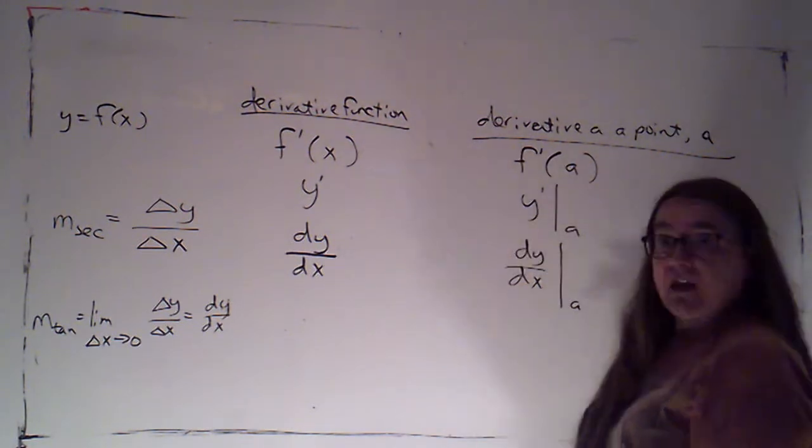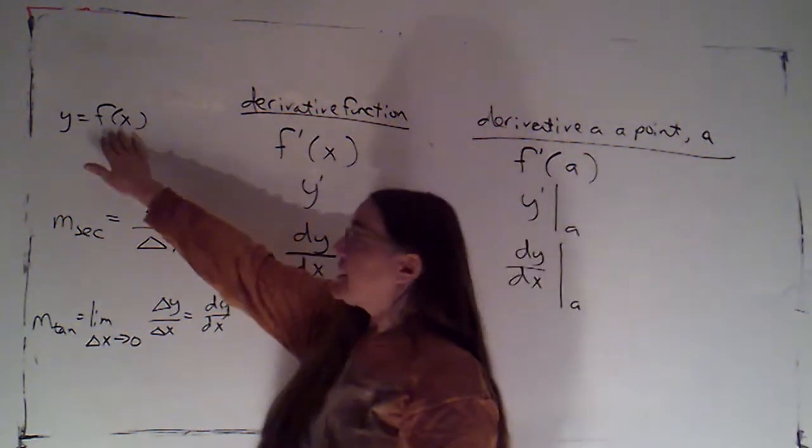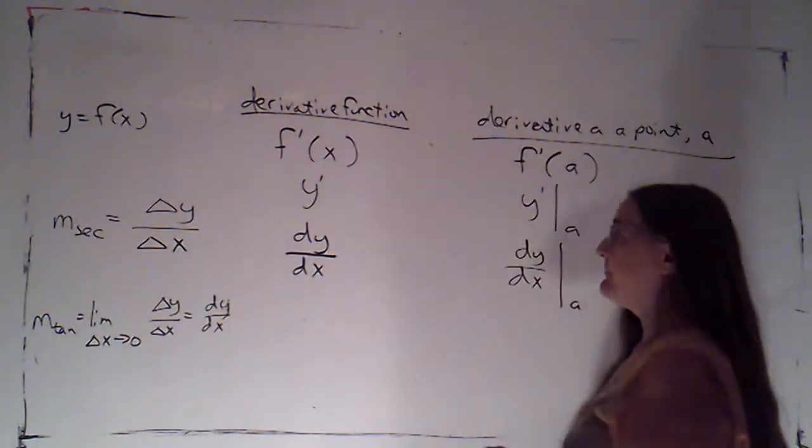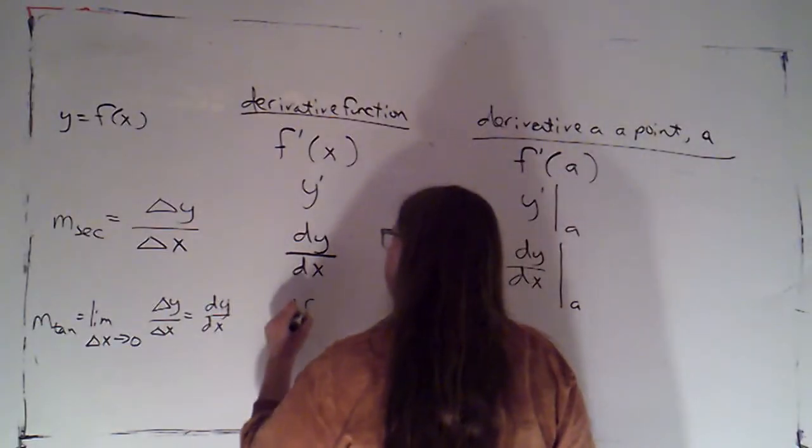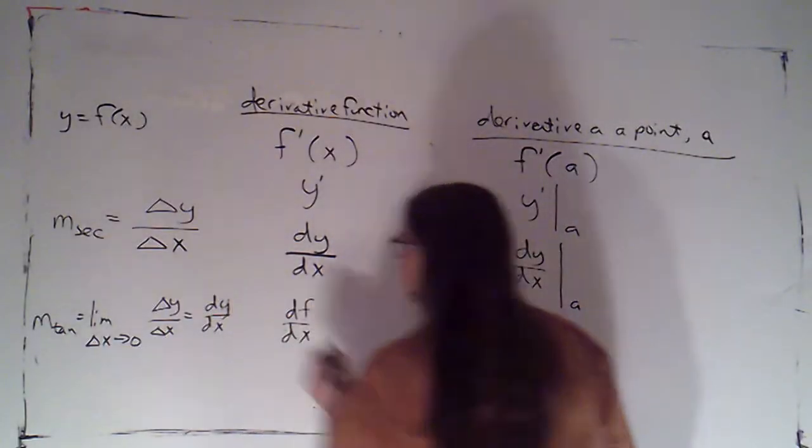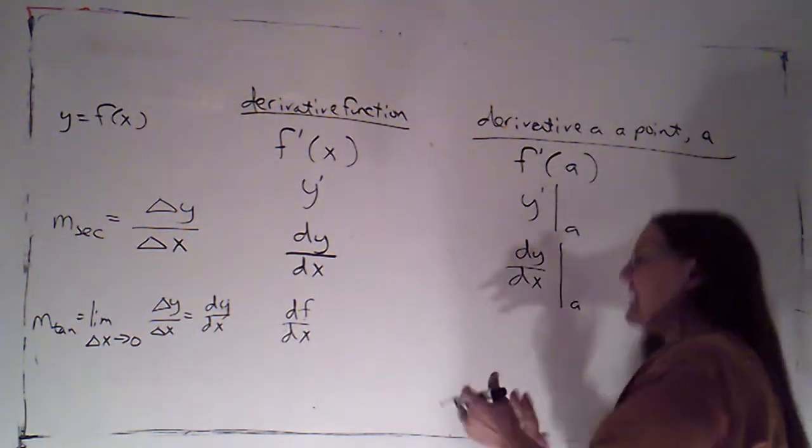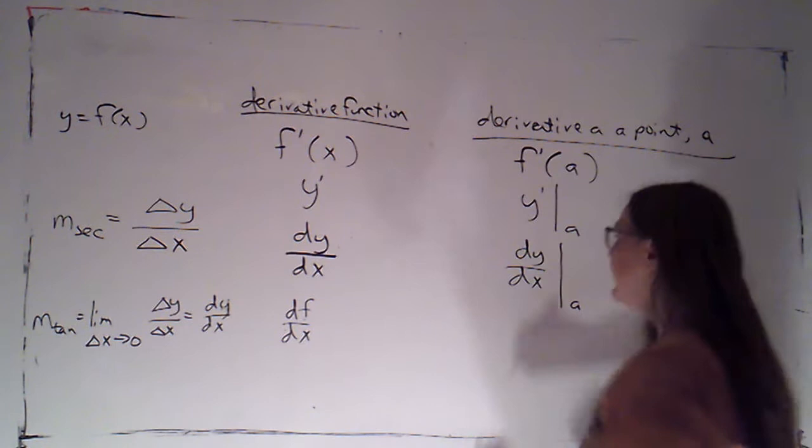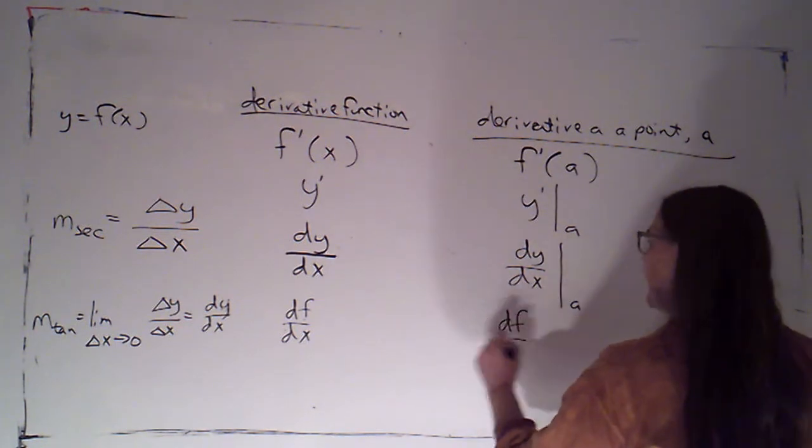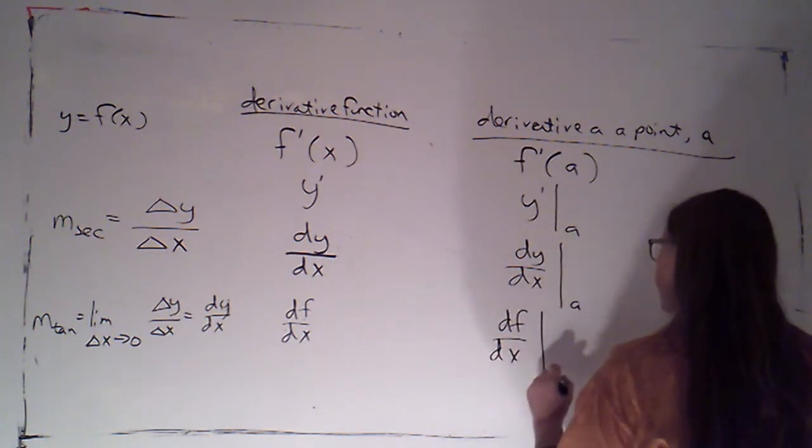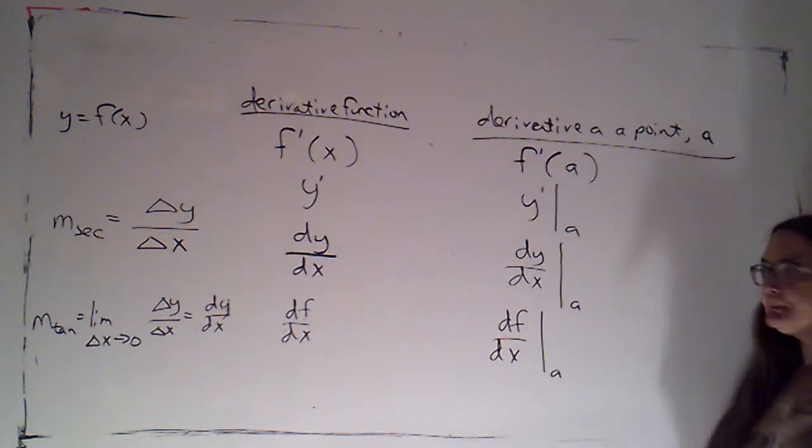Now, with this notation, our function had two names. We could call it y or we could call it f of x. It's also possible to write df by dx. So just name the function f instead of naming it y. And then I would evaluate that at a. I would indicate that again with an evaluation bar.